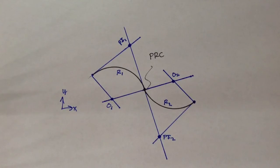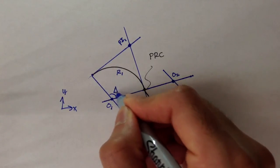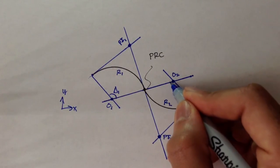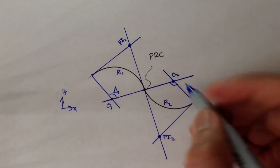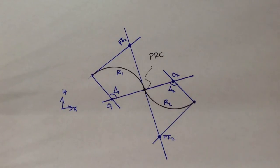And we know from our horizontal curve discussion that this is delta 1, which is the interior angle for curve 1. This is delta 2, and that's the interior angle for curve number 2.